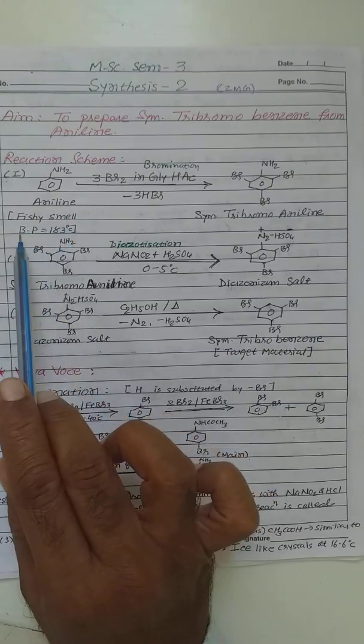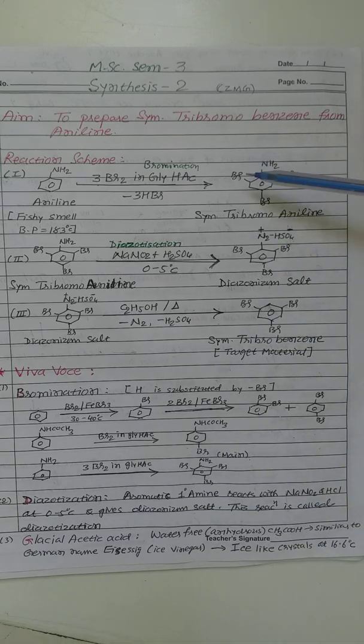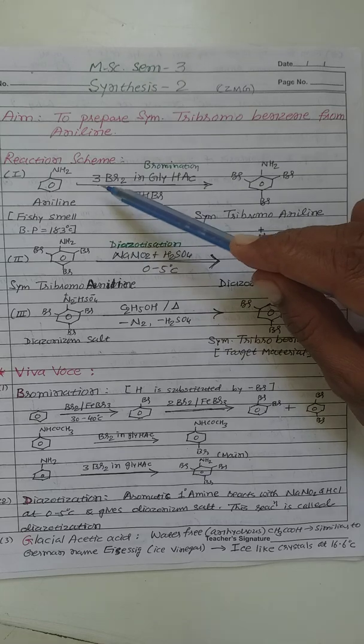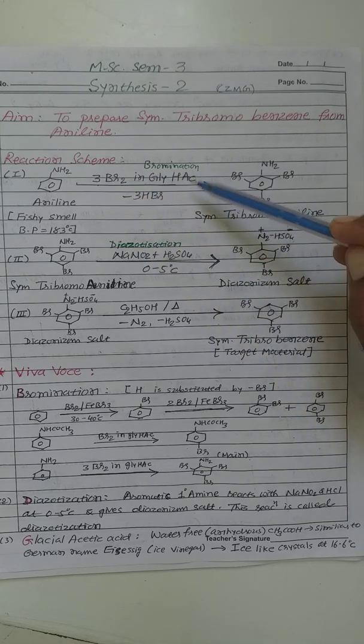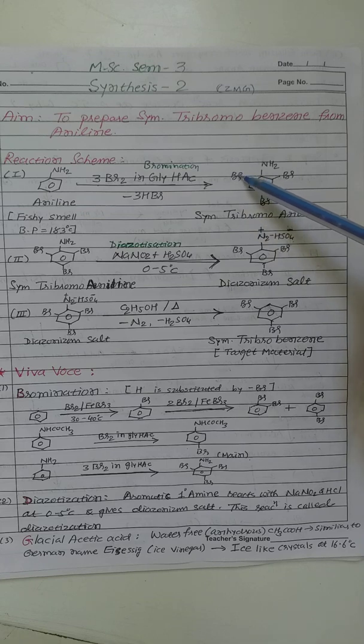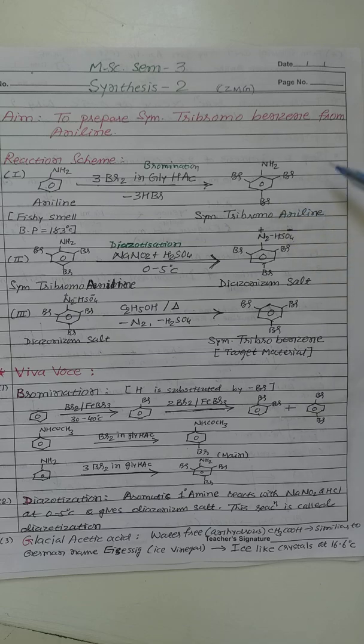Aniline: fishy smell, boiling point 183 degree celsius temperature. We want to attach three bromine atoms in aniline, so three bromine water in glacial acetic acid is required, and during bromination chemical reaction three bromine attached on two, four and six position of aniline and we will get symmetrical tri-bromoaniline as an intermediate.